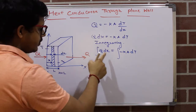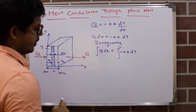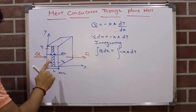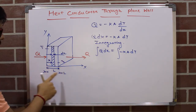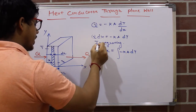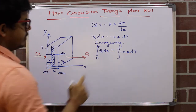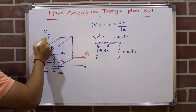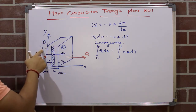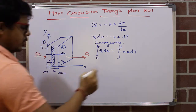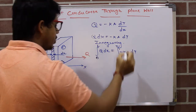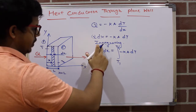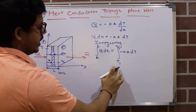Here, x is the variable and L is the thickness of the wall, so x goes from 0 to L. For the temperature variable dT, we look at the two faces: face one has temperature T1 and face two has temperature T2, so the temperature limits are from T1 to T2. In the case of dx it is from 0 to L, and in the case of dT it is from T1 to T2.